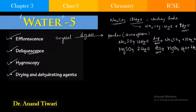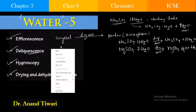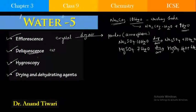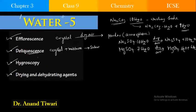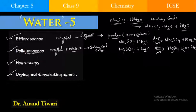Certain water-soluble substances, when exposed to the atmosphere at ordinary temperature, absorb the moisture from the atmosphere, become moist, lose the crystalline form, and then dissolve in that absorbed moisture to become a saturated solution. So here the crystal form takes the moisture and converts into a saturated solution. In efflorescence the crystal converts into powder form; here in deliquescence, with the presence of moisture, it is converted into a saturated solution. Such a substance is called a deliquescent substance, and the phenomenon is called deliquescence.